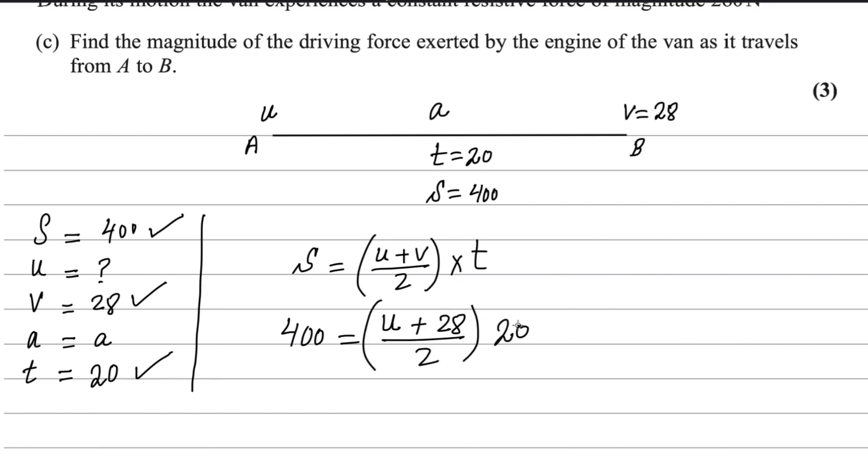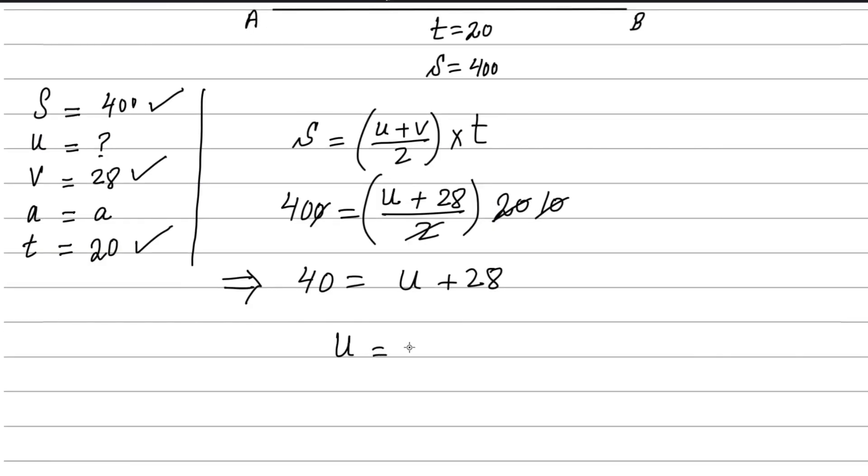This 2 and 20 can be cancelled out, we're left with 10. This 10 will divide to the other side, so 40 equals u plus 28. And u equals 40 minus 28, that equals 12. 12 meters per second. So this is the answer for the first part. It is as required. First part is done.